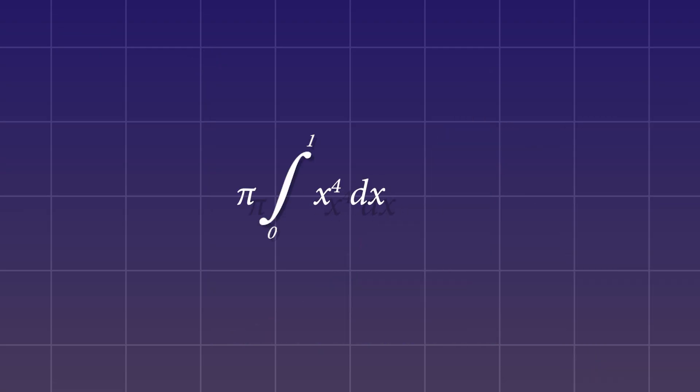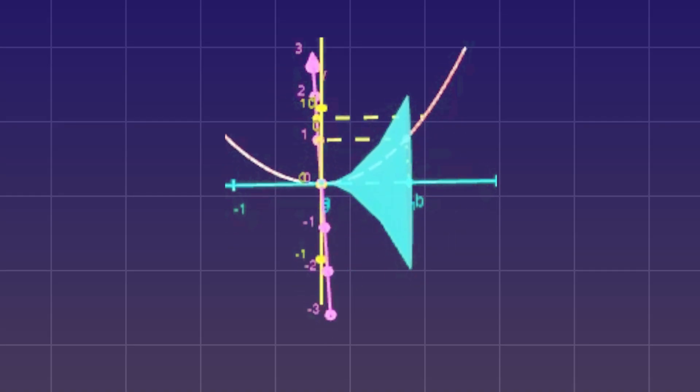Now multiply the exponents, pull out pi because it's a constant, and now find the antiderivative, which is 1 fifth times x to the fifth. Plug in 1, it remains 1 fifth. Plug in 0, it becomes 0. Subtract them, multiply by pi, and your answer is pi over 5. That's the volume of this wormhole-looking thing.